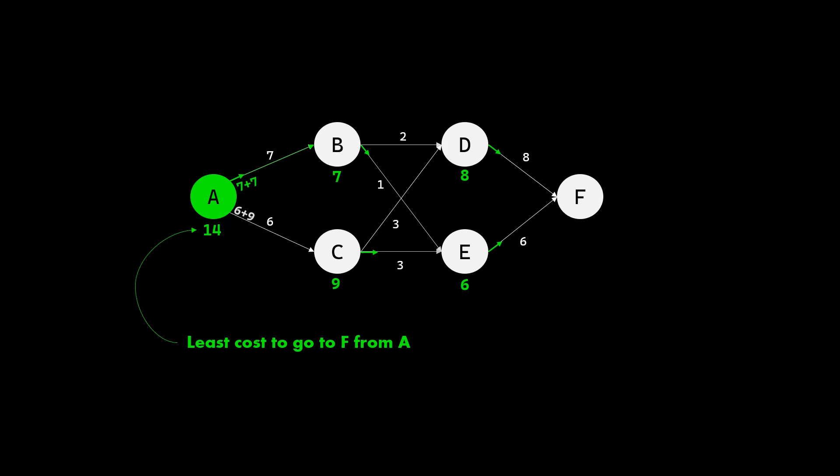Now that we have calculated least cost from each state to the destination F, we can trace the most optimum path starting from initial state A. All we have to do is to follow the little green arrows we had marked in the previous steps. These arrows guide us on the optimum path. Voila, we have now determined the most optimal path from A to F. This algorithm is very generic and can be used to solve variety of optimization problems.